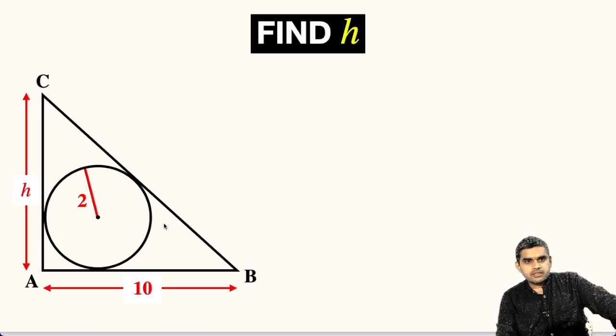In this question, a triangle ABC is given. The measure of one of its sides, AB, is given as 10 units.